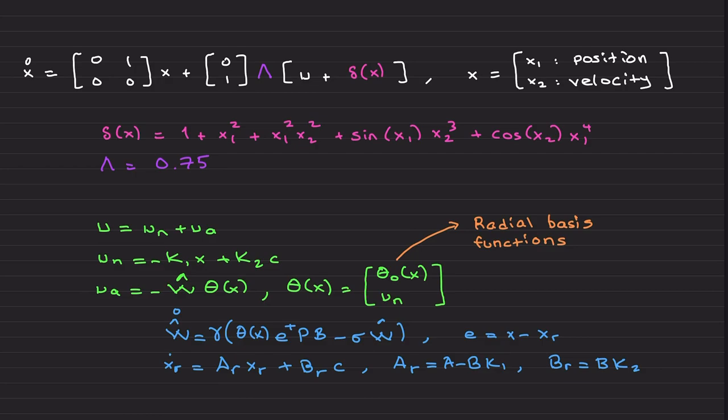Since we don't know the structure, we are going to pretend that we don't know the structure of this uncertainty. We are going to construct theta with radial basis functions. Later in the code I am going to call it as neurons.